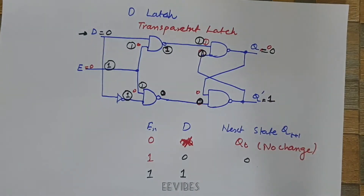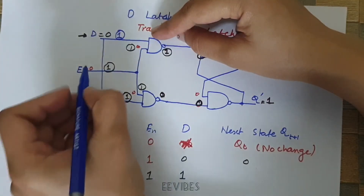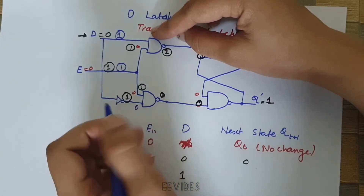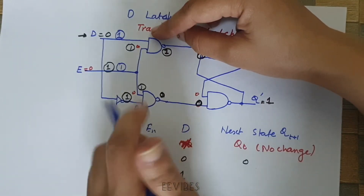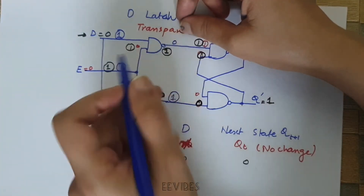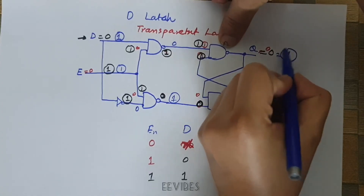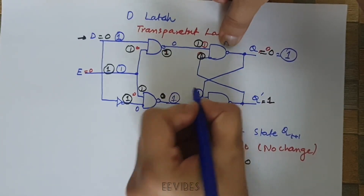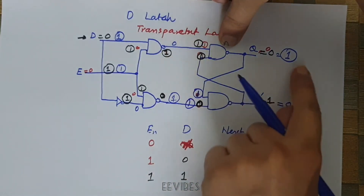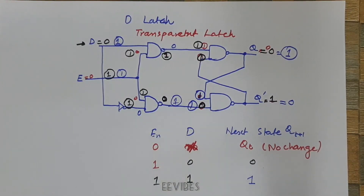Now with enable equal to one and D equal to one, the inverter produces zero. This zero forces one NAND gate to output one, while the other NAND gate outputs zero. That zero forces the next NAND gate to output one. This one combines with the other input to generate Q bar equal to zero, meaning Q equals one. The D latch has successfully transferred the input D value to the output.